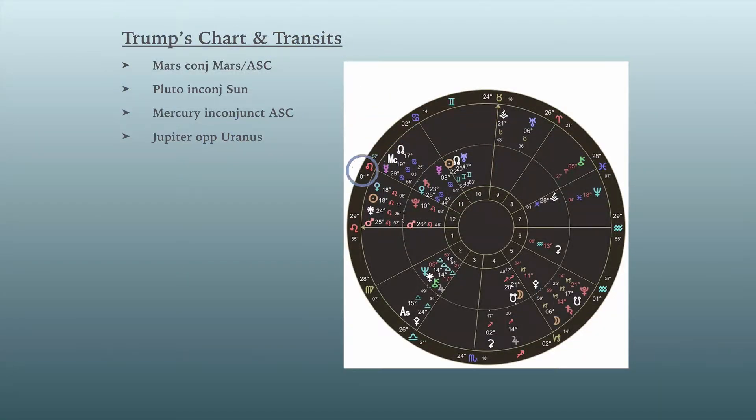Let's look at Trump's chart. And here again, if you've been watching the video, this is a bi-wheel. We have Trump's natal chart in the center. And we have his transits where the planets are located currently plotted, positioned relative to his natal chart in this outer ring. Okay. Well, what's going on? Well, actually, over a few day period, he has Mars transiting his own Mars on his ascendant.